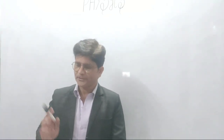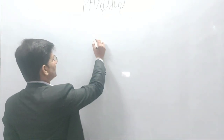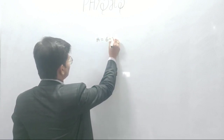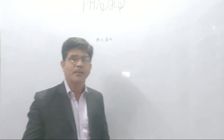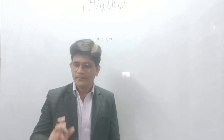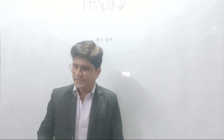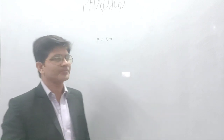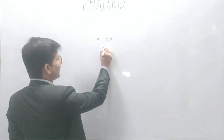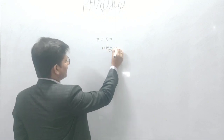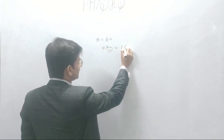According to the question, we have an equilateral glass prism, so the prism angle must be 60 degrees. The refractive index is given in air and the prism is made of glass, so mu_g is given as 1.6.